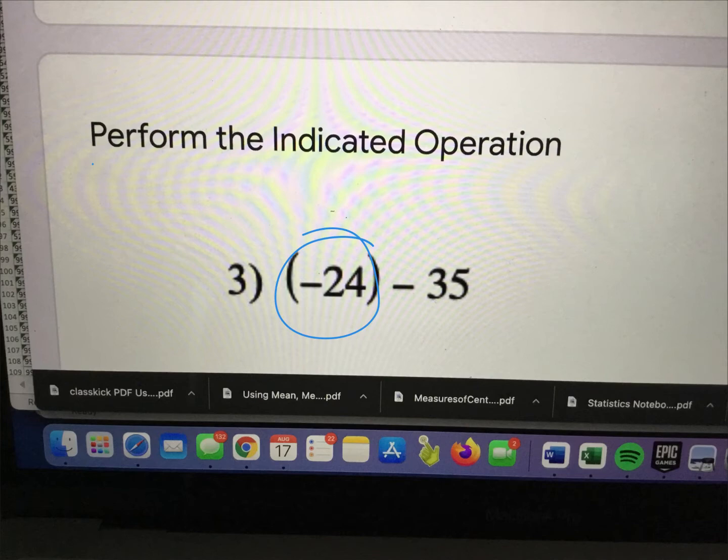So what exactly happens when you have negative 24 already, and then that number decreases? Which means it's going down, because that's what the subtraction means. So since it started out negative, and it's going to decrease by 35...